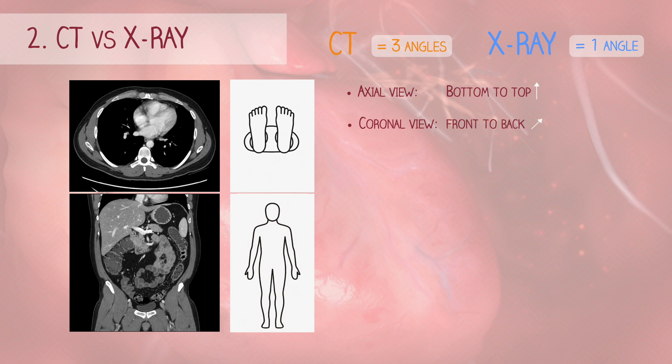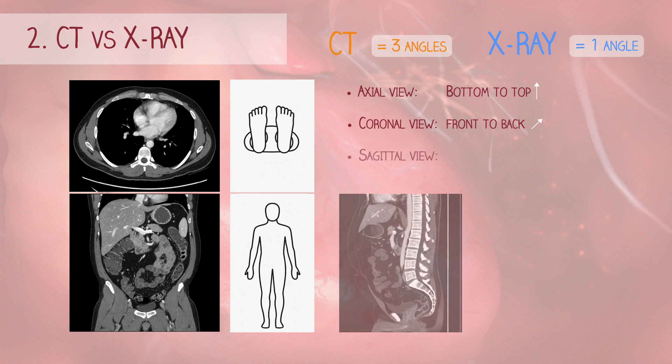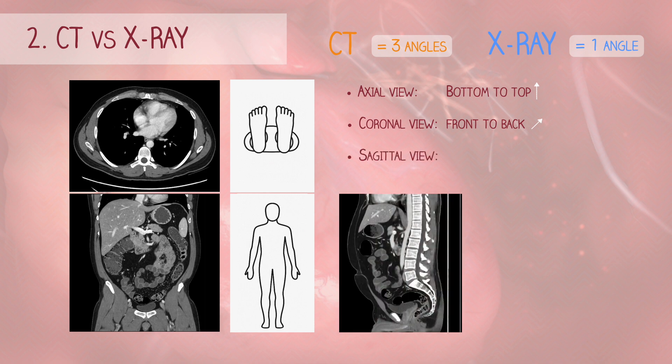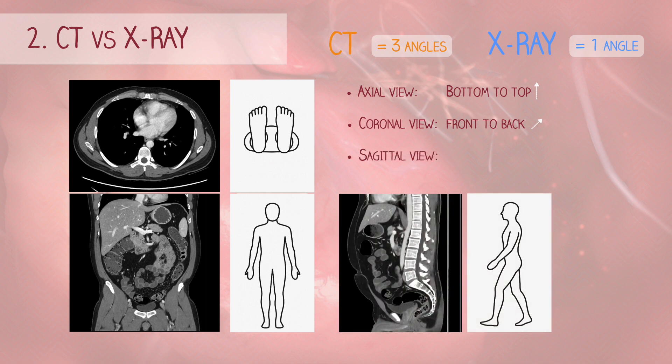The final view is the sagittal view. This is like cutting through the patient from their belly button to their back, dividing the body into left and right sections. These slices give you a view from the side.